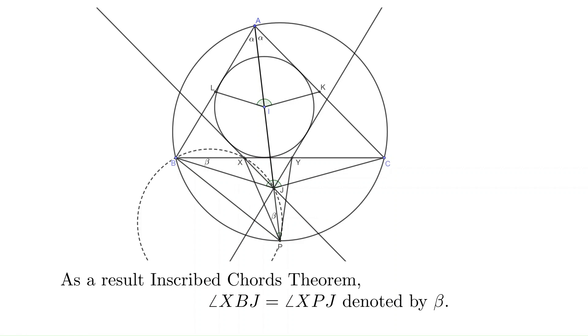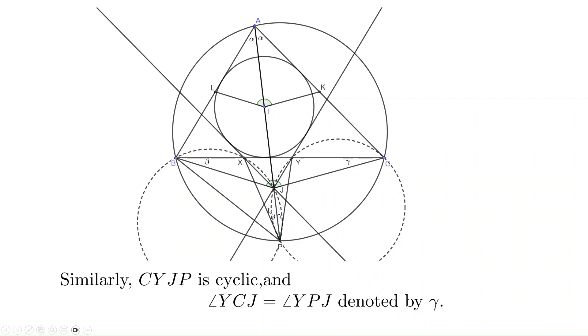Therefore, using the inscribed chord theorem again, angle XBJ equals XPJ, because they share the same chord XJ. We denote these two angles as measure beta. Similarly, CYJP is also cyclic, and we have angle YCJ equals angle YPJ. We denote them as measure gamma.